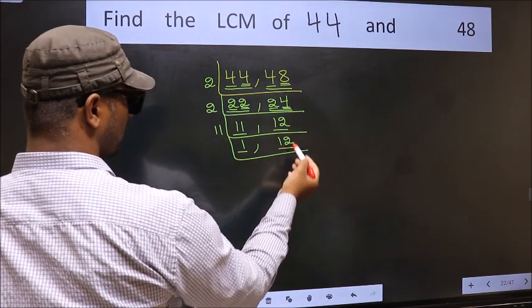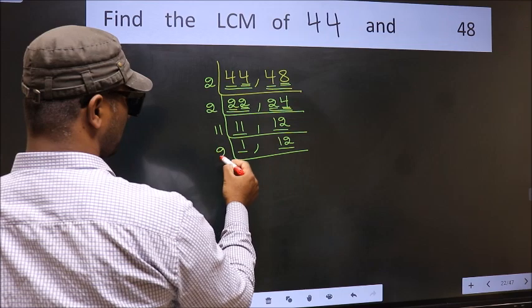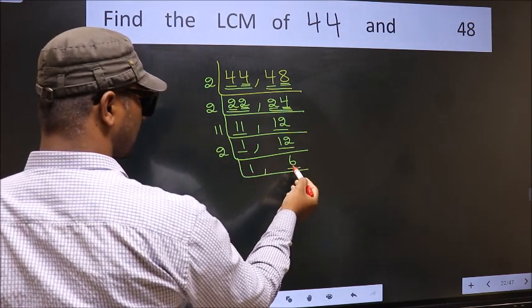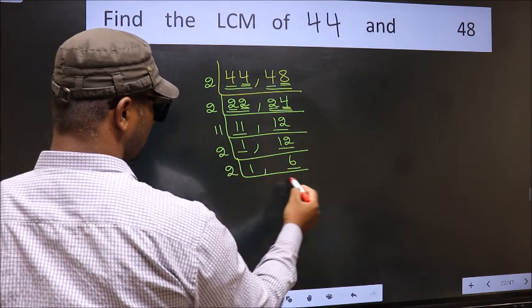So focus on the next number 12. 12 is 2 times 6. Now we have 6, 6 is 2 times 3.